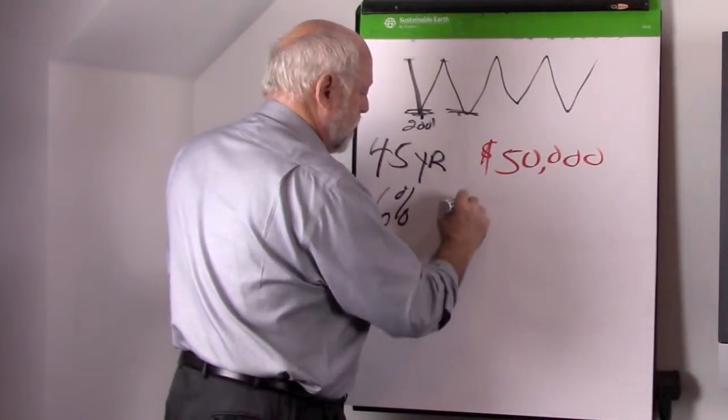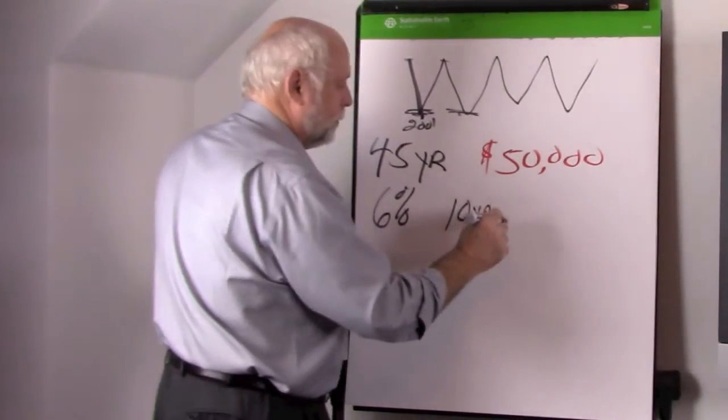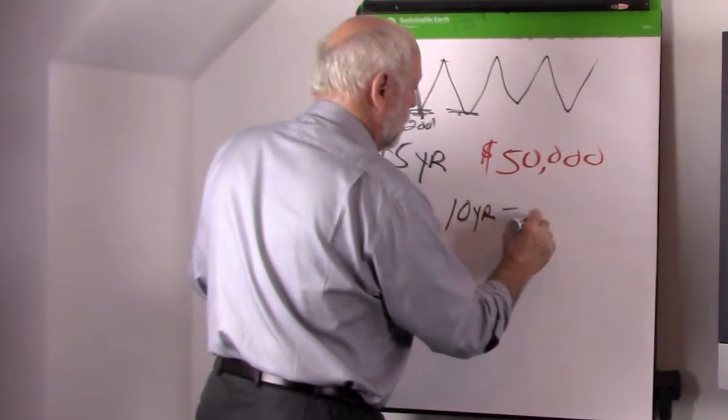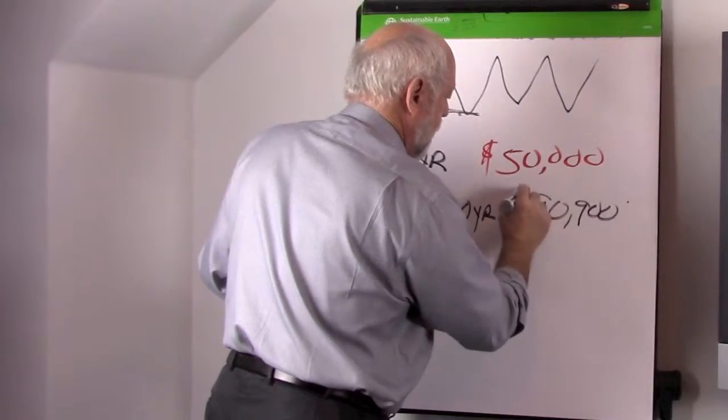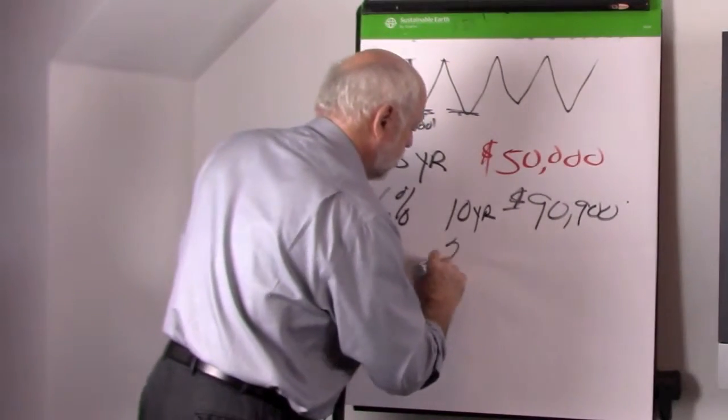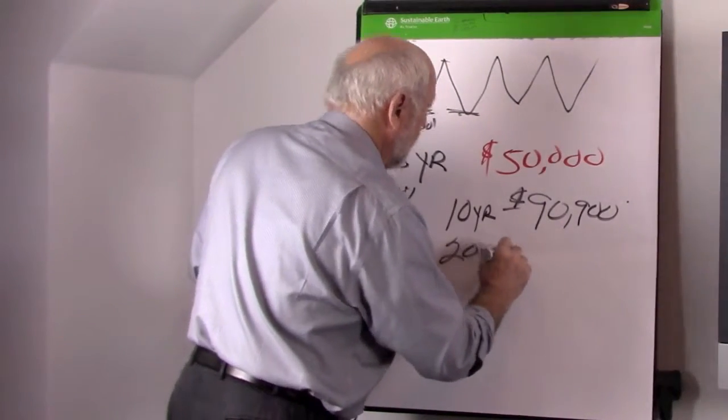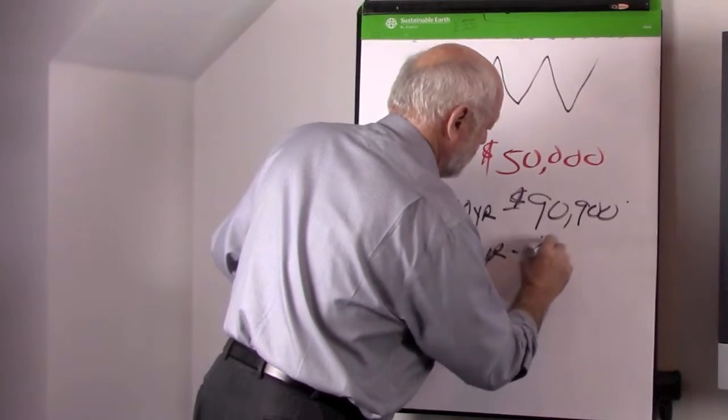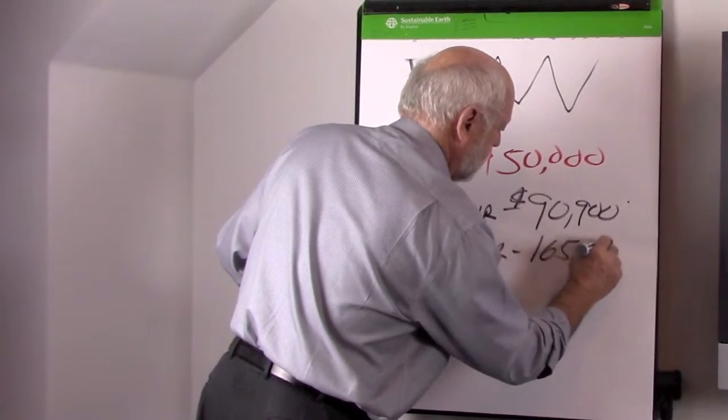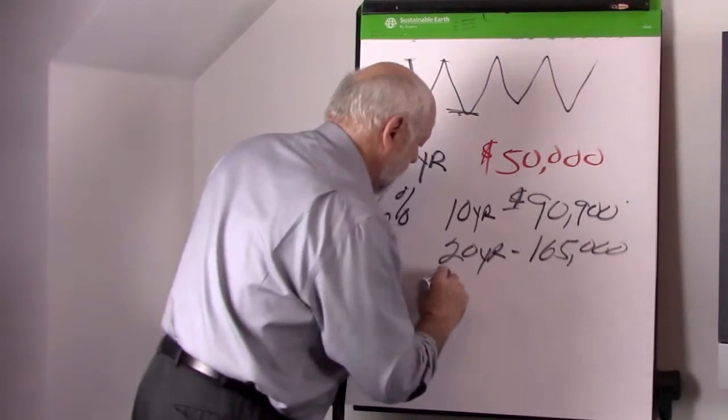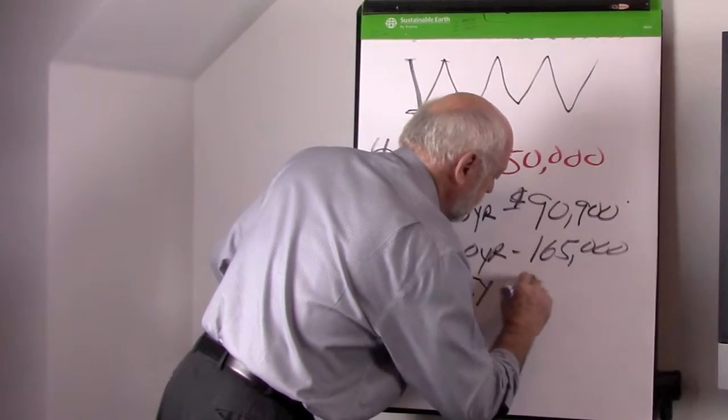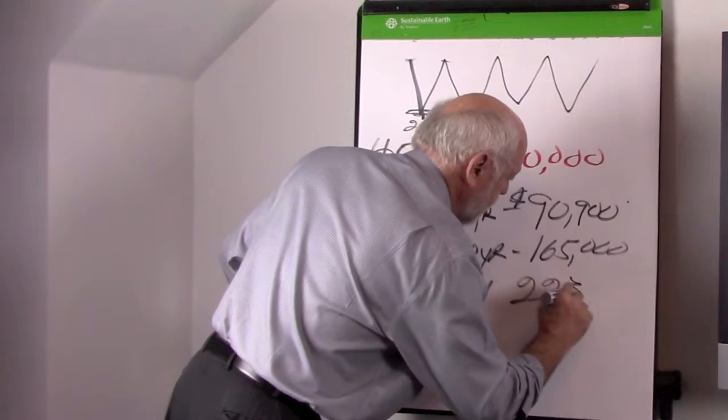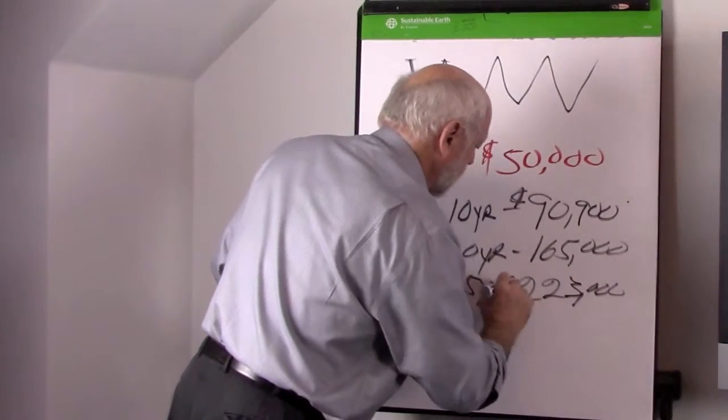In 10 years, that $50,000 would grow to $90,900 in round numbers. In 20 years, that money would grow to $165,000 in round numbers. And in 25 years, that number would grow to $223,000 in round numbers.